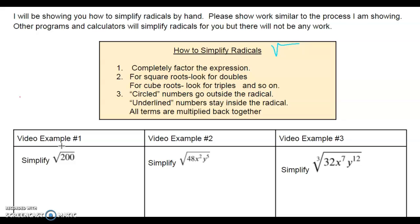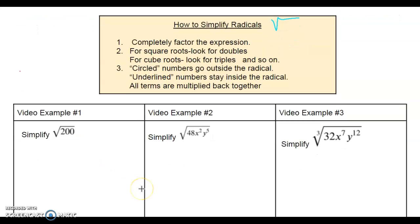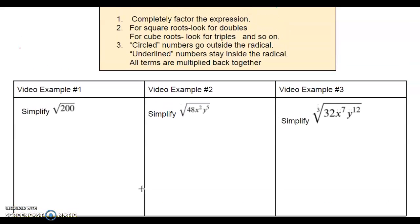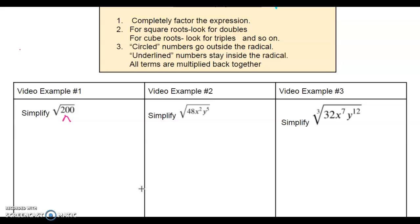Everything in a square root or cubed root is actually being multiplied. Let's look at example number one. You need to come up with the factors of 200 — anything that multiplies together to get 200. I think of 2 times 100. You'll want to go ahead and write these notes on the piece of paper provided for you, and that's part of your credit. You want to keep breaking down the numbers until you can't break them down anymore. The 2 is done — I still rewrite it because some students lose track if we don't.